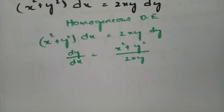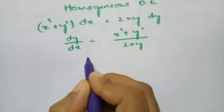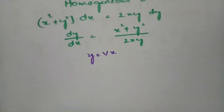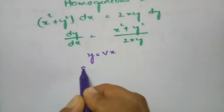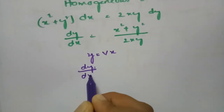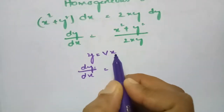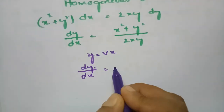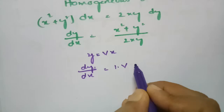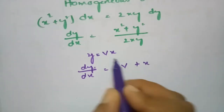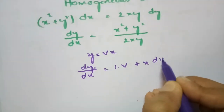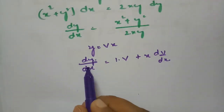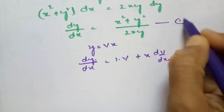In this case we substitute y = vx. So y = vx. We differentiate both sides to get dy/dx. Differentiating: the derivative of vx with respect to x gives v times 1 plus x times dv/dx. So dy/dx = v + x·(dv/dx). We now have the value of y as well as dy/dx.